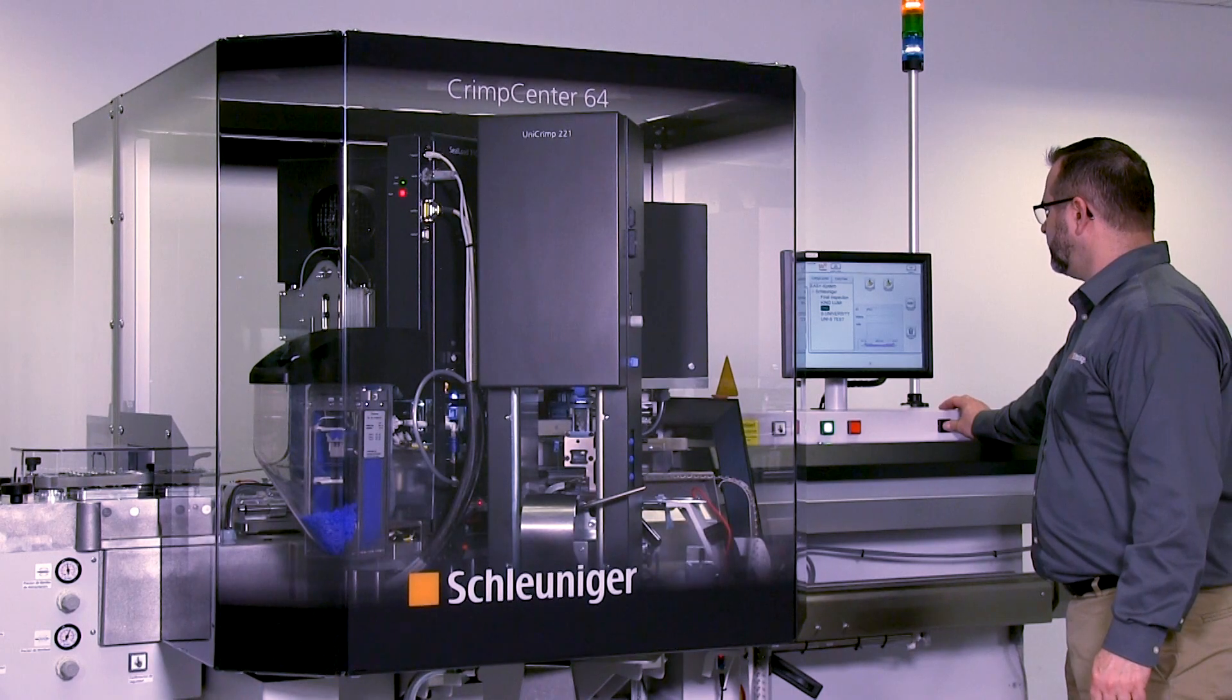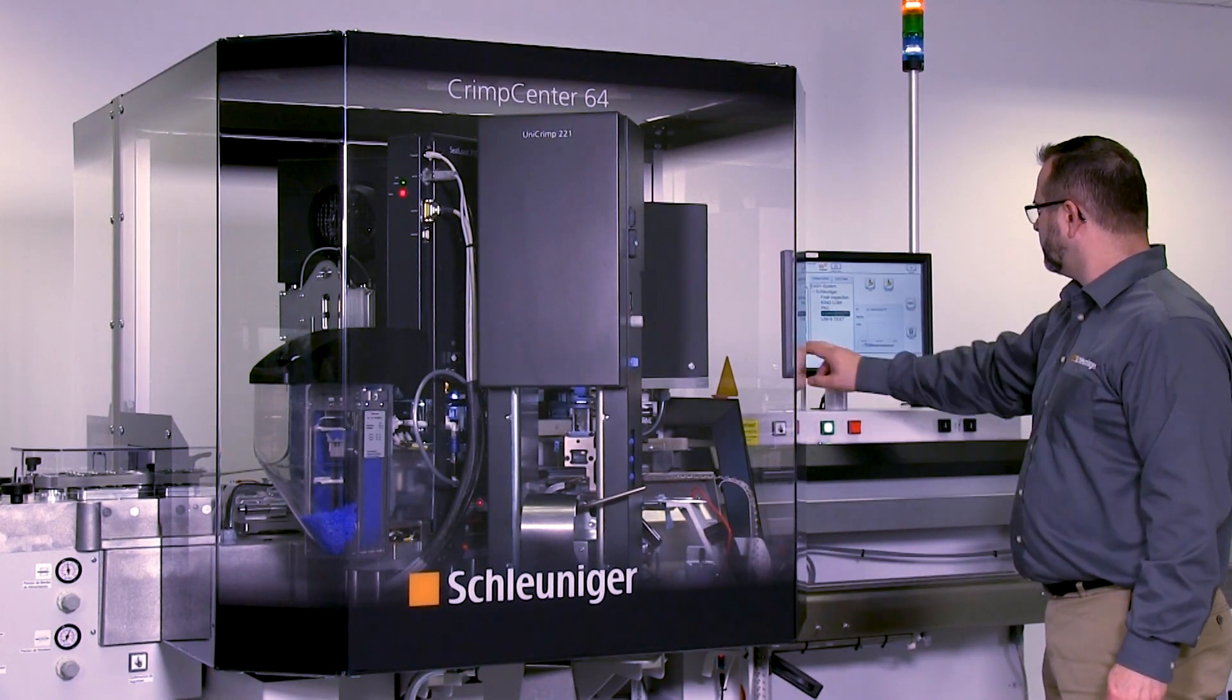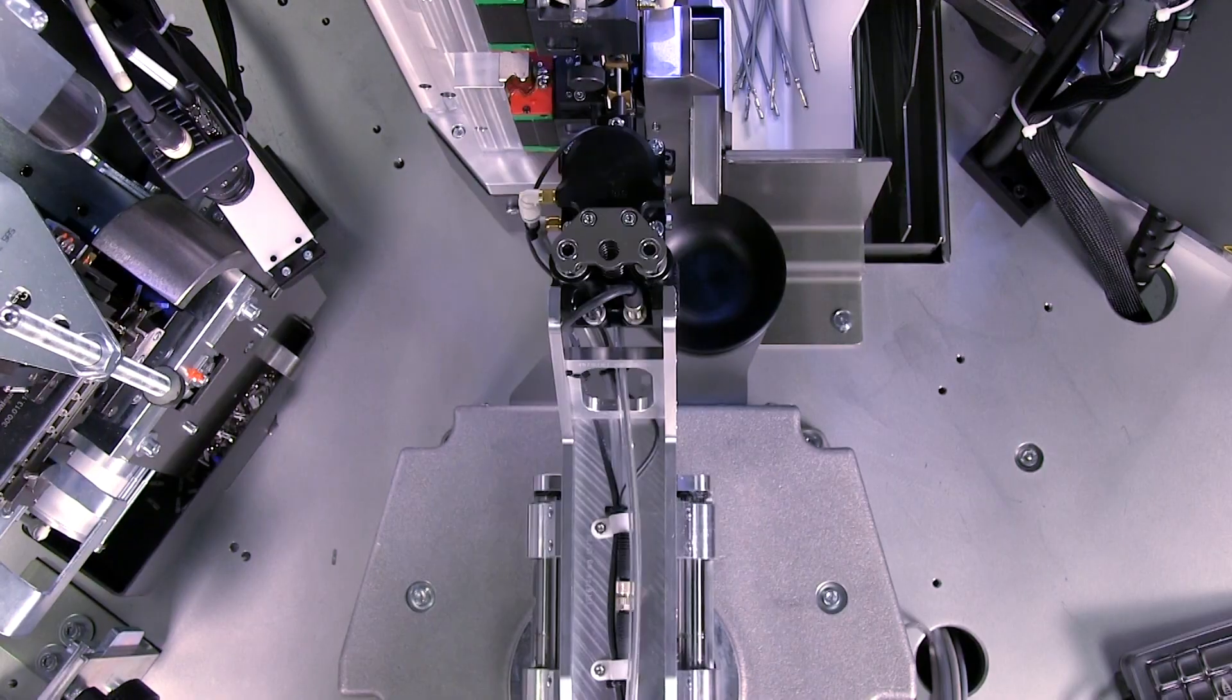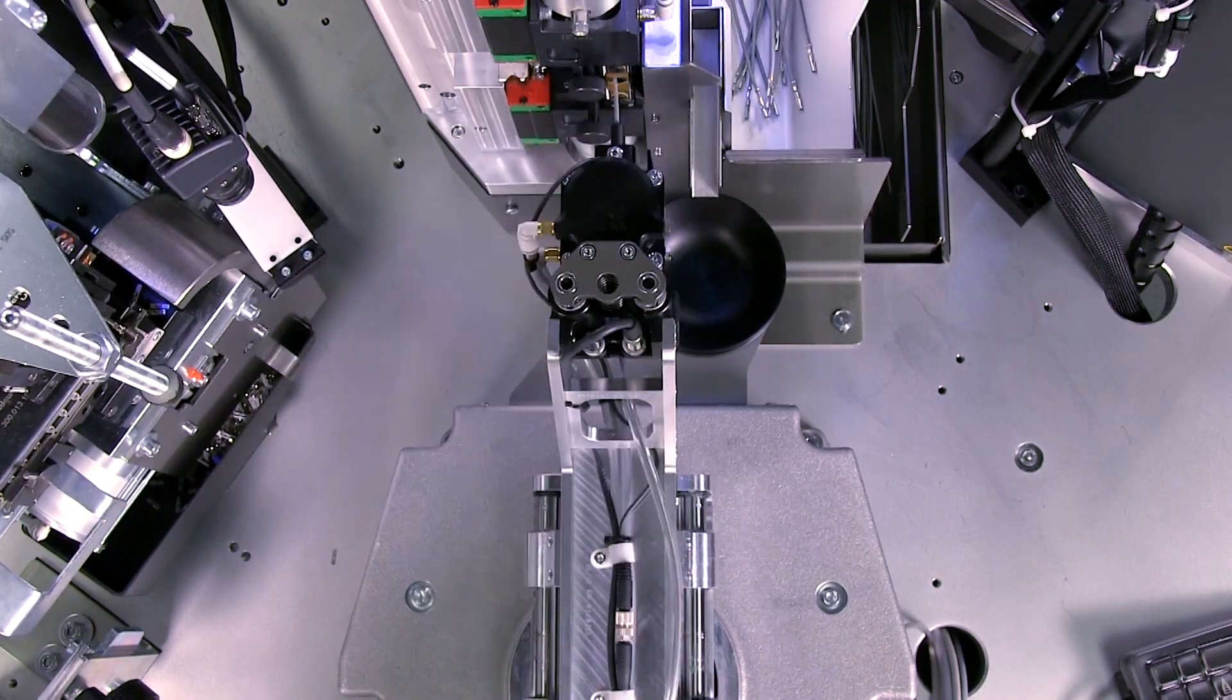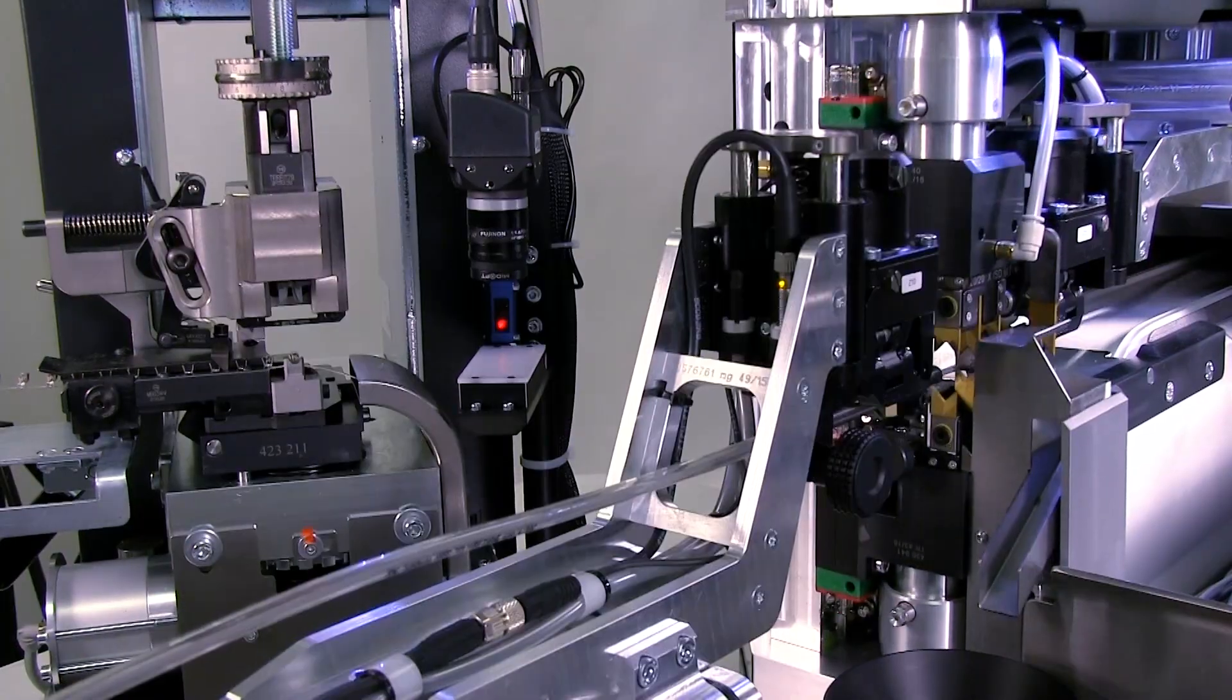The Schleuniger Crimp Center 6-Series machines are fully automatic swivel arm crimping machines for high-speed wire processing. Depending on the machine model, they can be configured with up to four to seven processing stations.